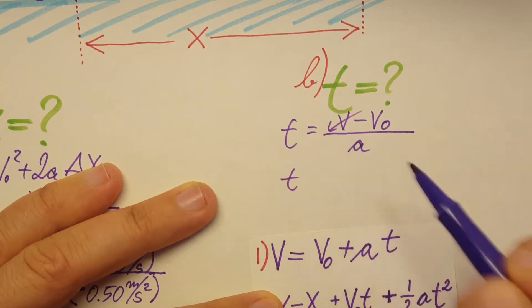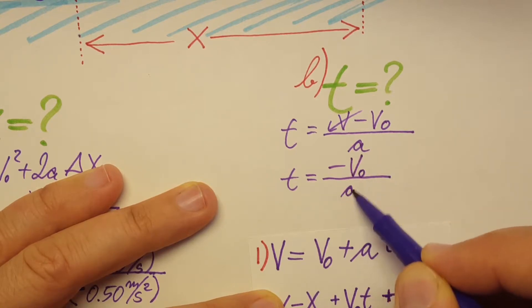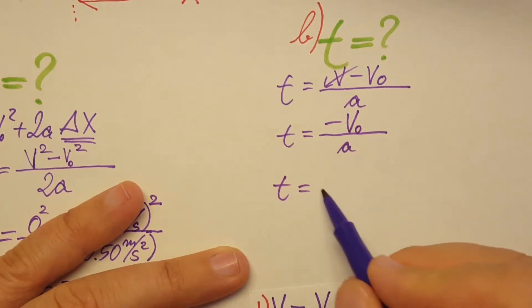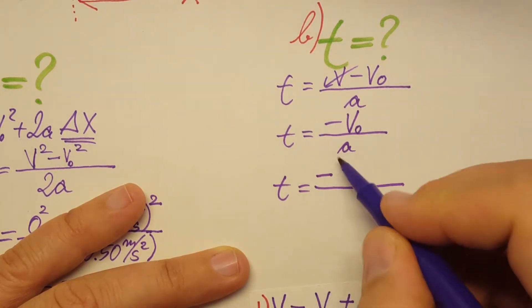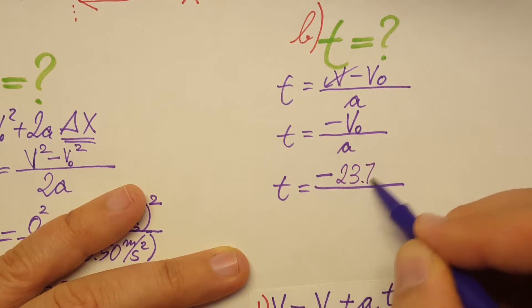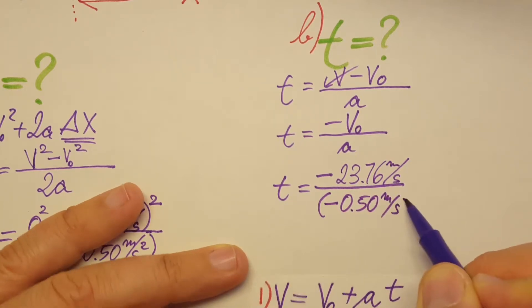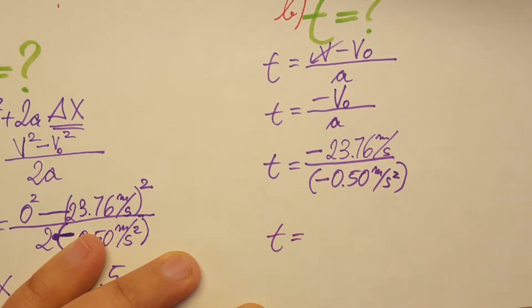Our v is zero, so we write negative v₀ over a. Plugging in the values: negative 23.76 meters per second divided by negative 0.50 meters per second squared. Calculator time - t equals 48 seconds.